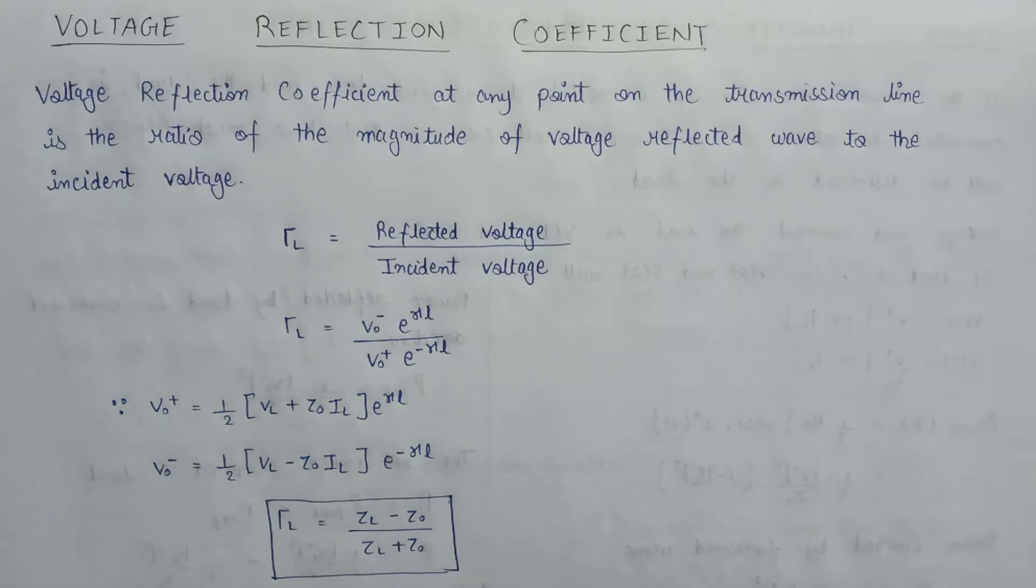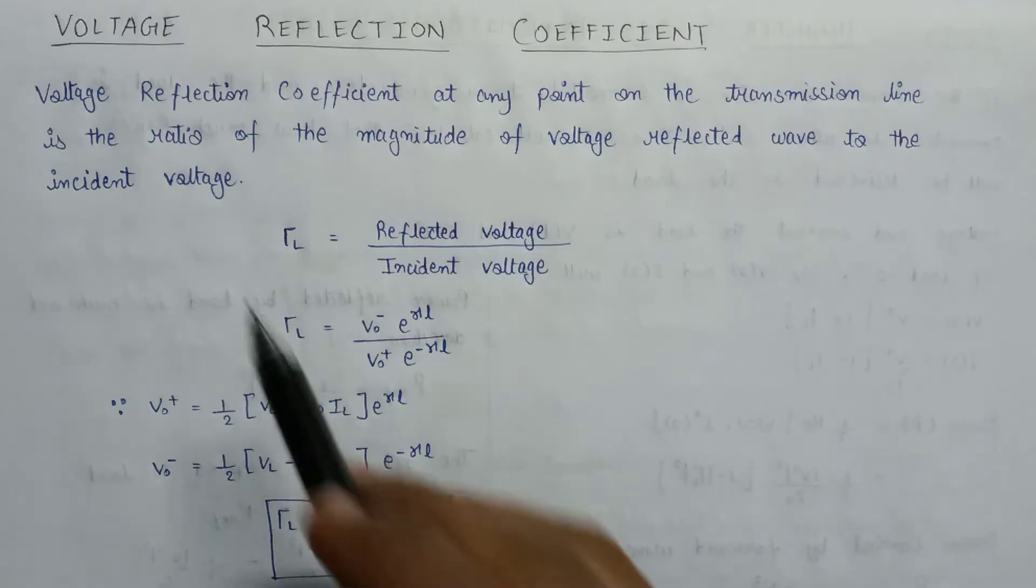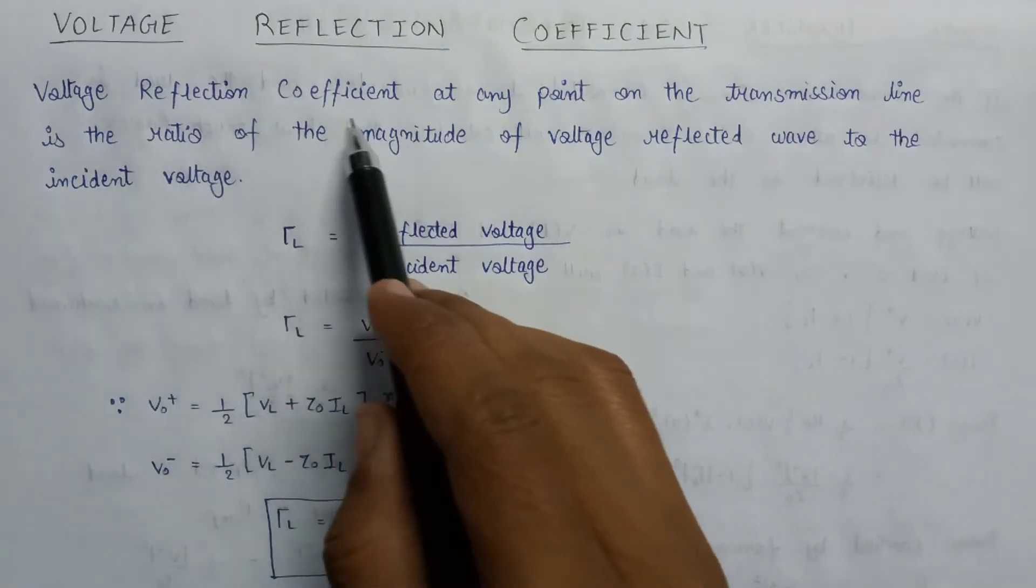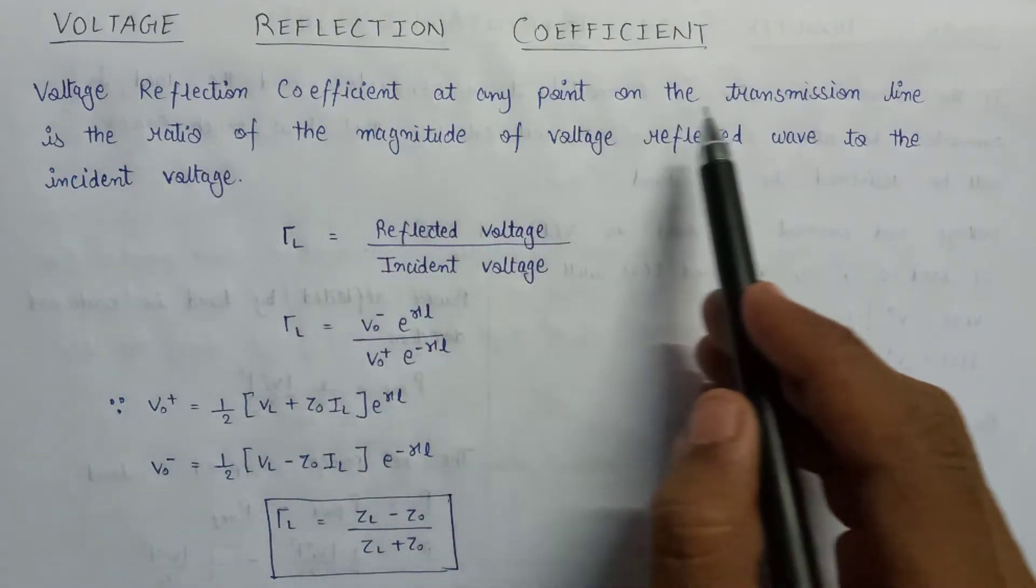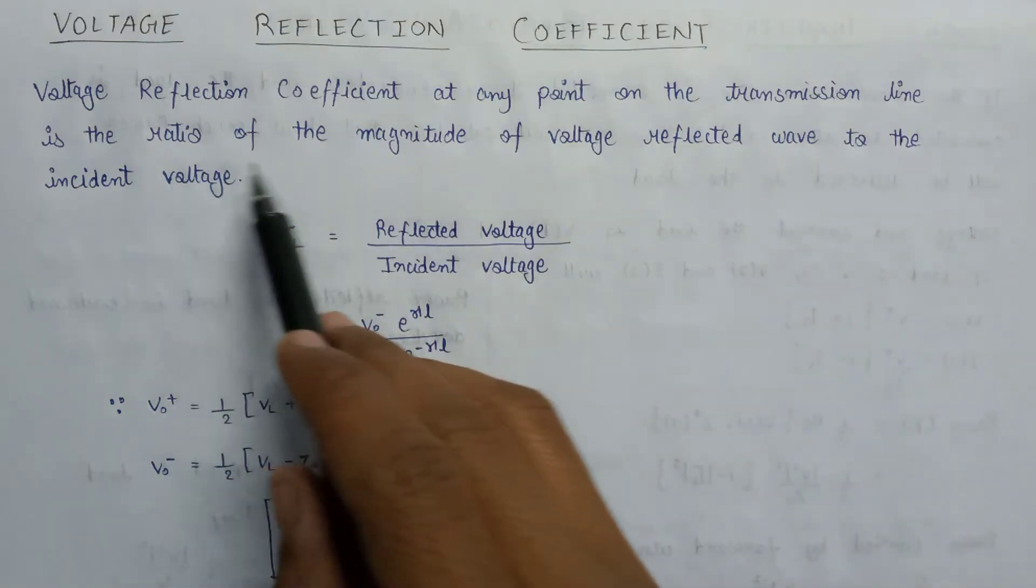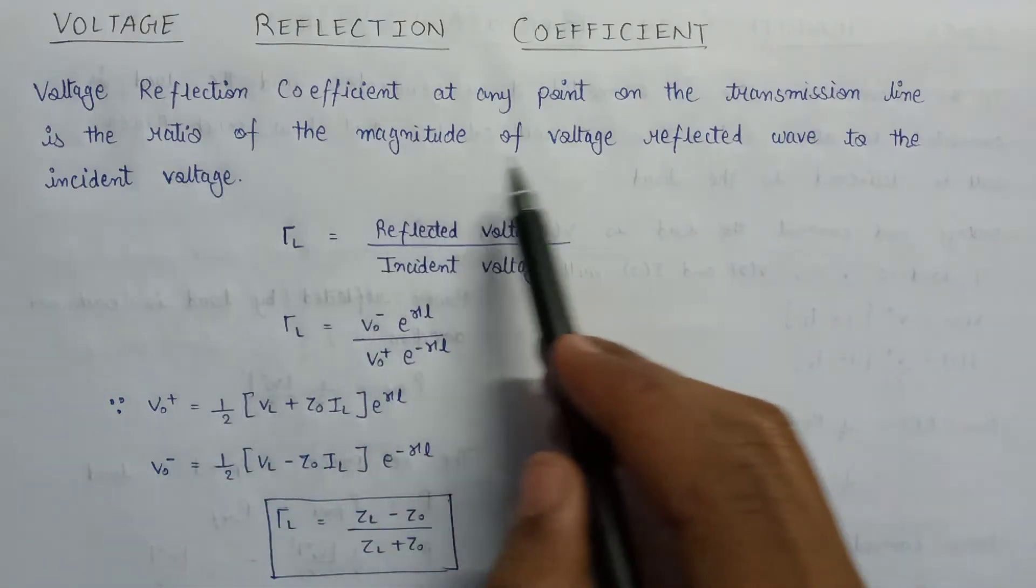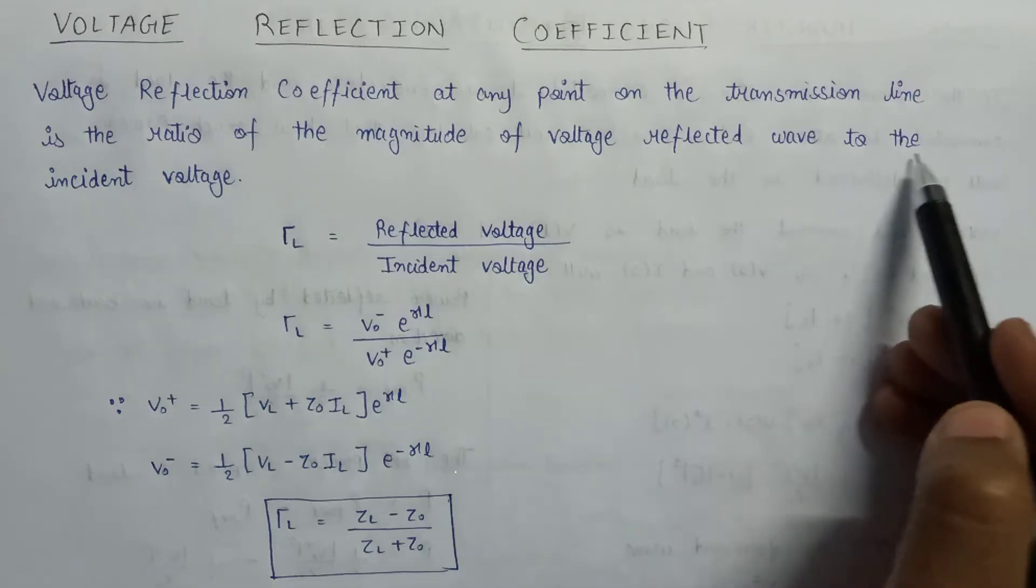Welcome all. In this lecture we are going to learn about voltage reflection coefficient. The voltage reflection coefficient at any point on the transmission line is defined as a ratio of the magnitude of the voltage reflected wave to the incident voltage.